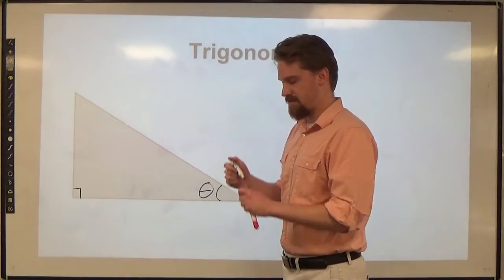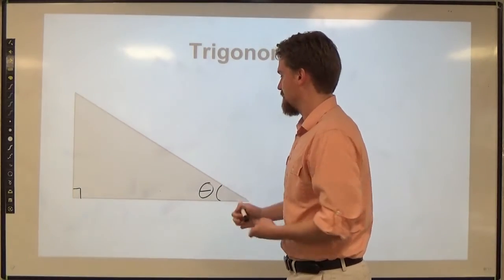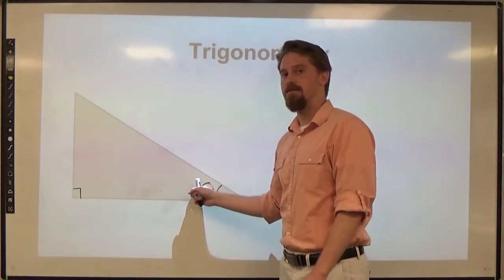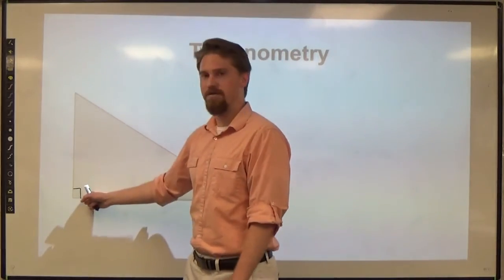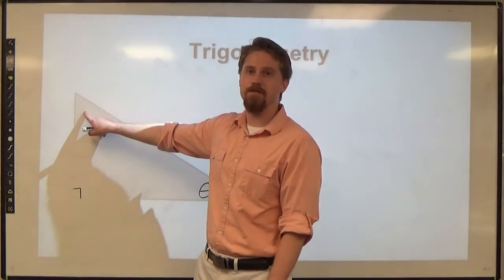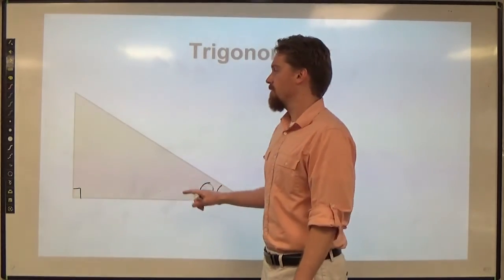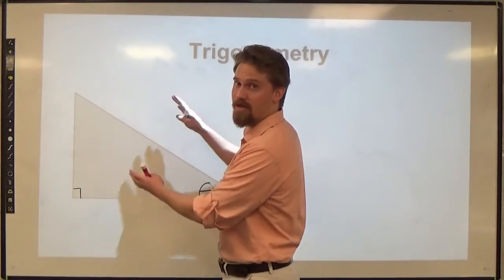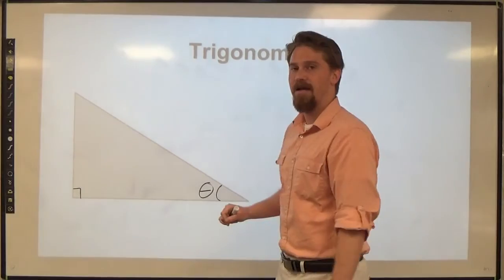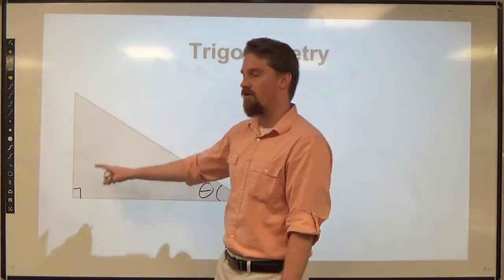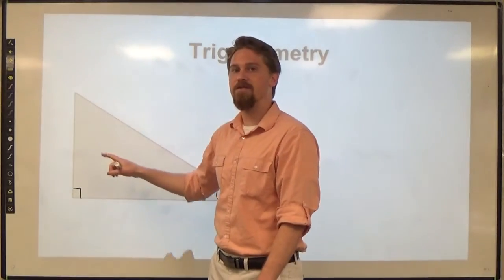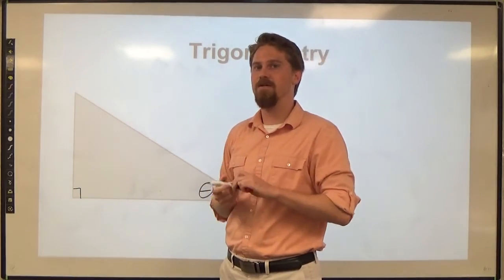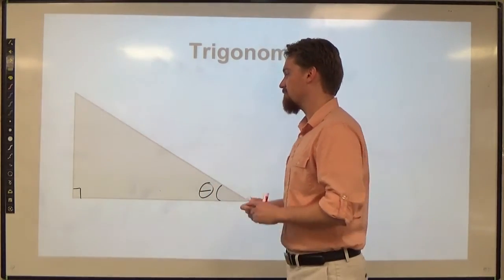What that does is it means for any given angle that I pick — let's say 30 degrees — if this is 30 degrees and that's 90 degrees, that forces the third to be 60 degrees. Any triangle with those angle measurements, no matter how big the triangle is in length, has similar ratios. All the angles have to match, so all the sides have to have similar ratios. Those ratios are what we're basing trig off of.